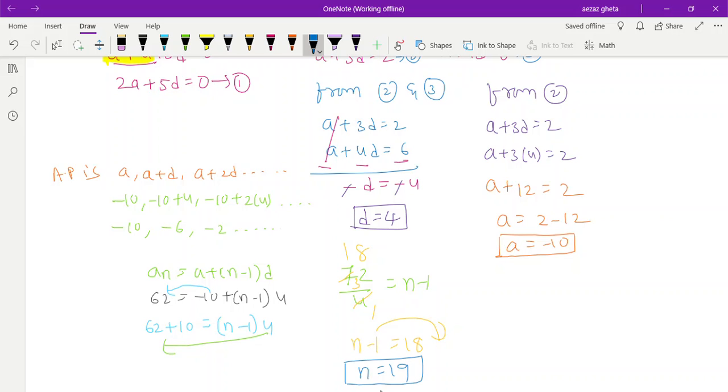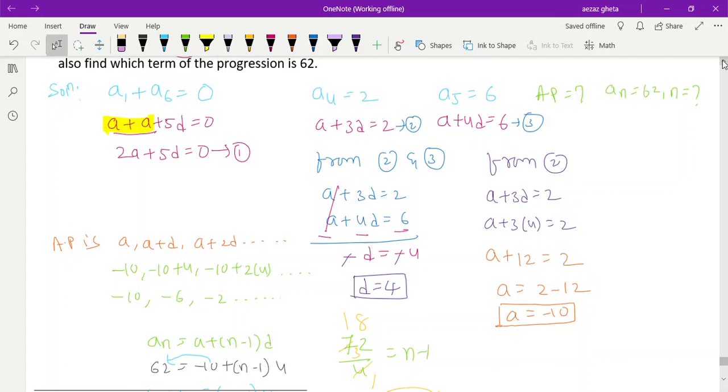Which term is 62? The 19th term. There are 20 terms total. I don't know why they mentioned this, but we have found the answer. Whatever the question asked - which term is 62 and find the AP - we've done it.